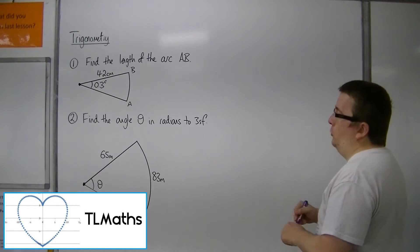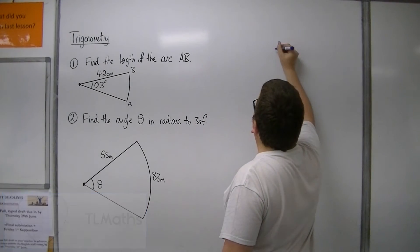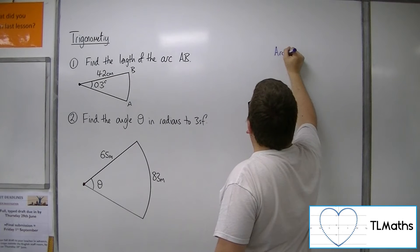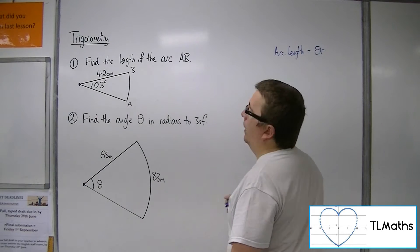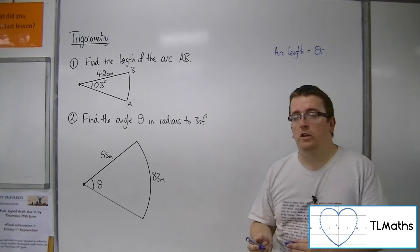I need to remember to solve both of these problems using the formula arc length equals theta times r, where theta is given in radians.